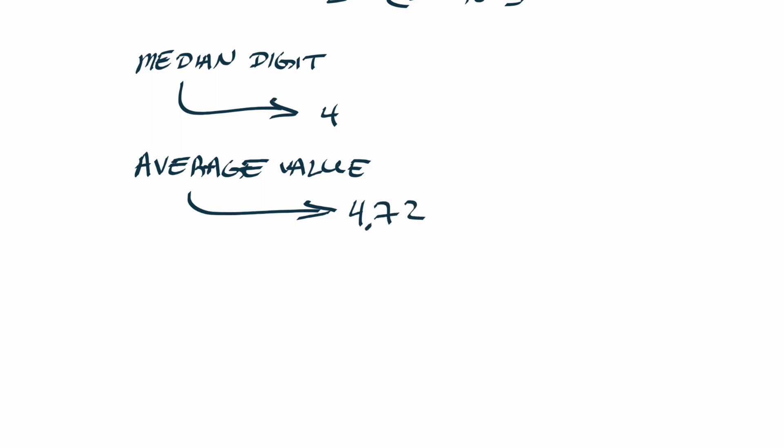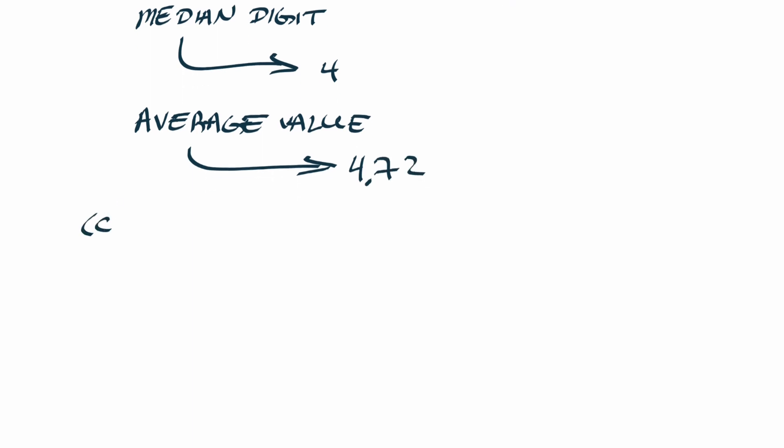Part c asks to find the standard deviation for the distribution. So this is the general formula for finding a standard deviation: you're going to have the square root of the expectation value of j squared, or the average value of j squared, minus average value of j quantity squared.